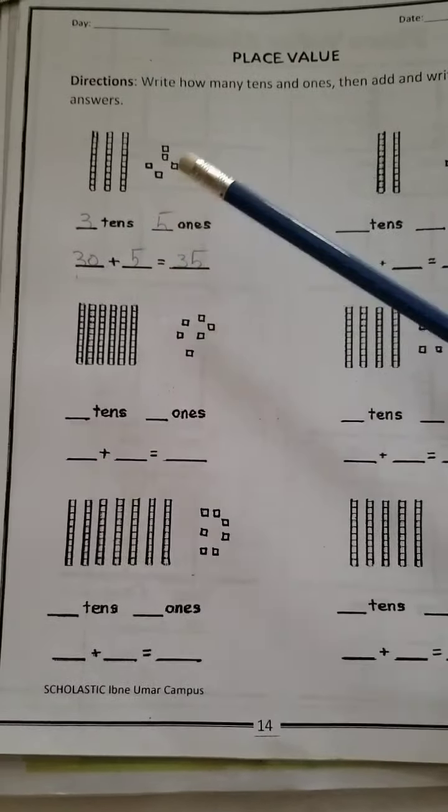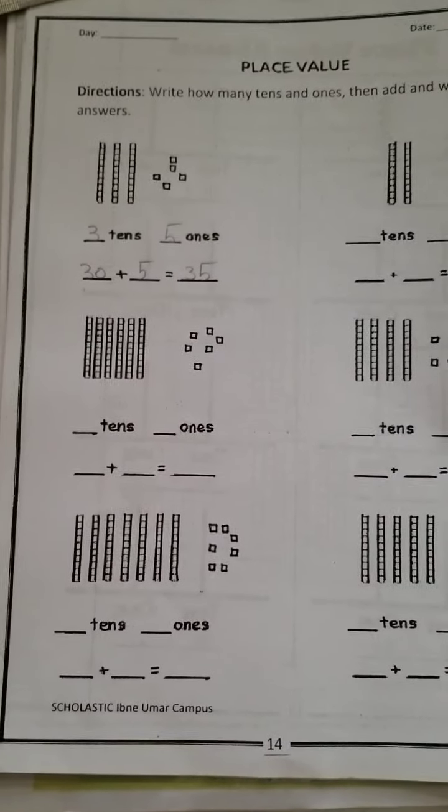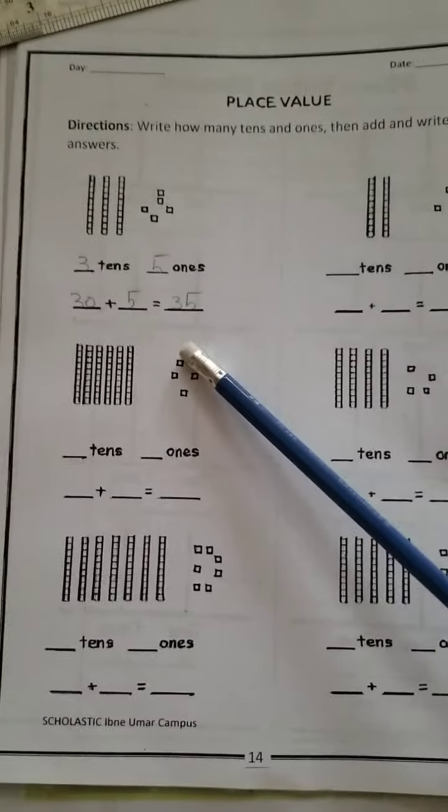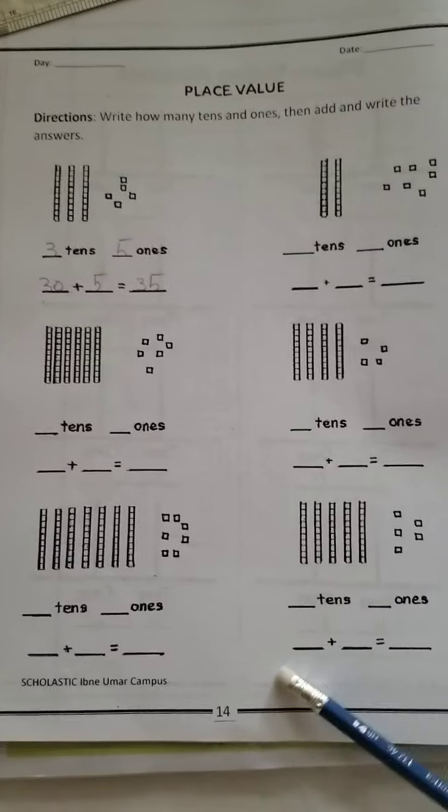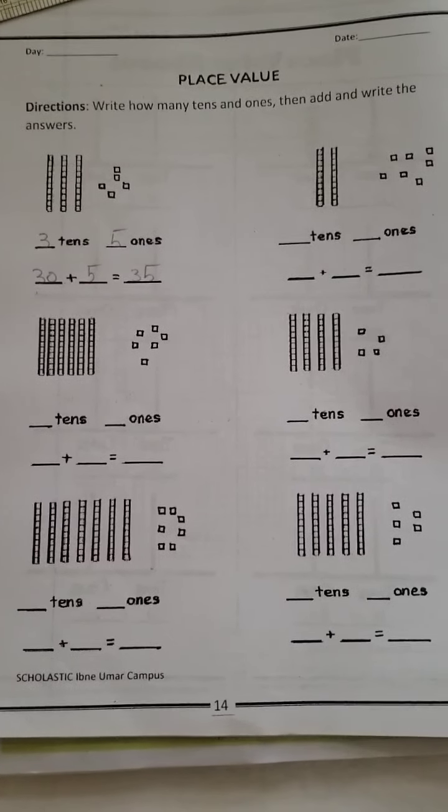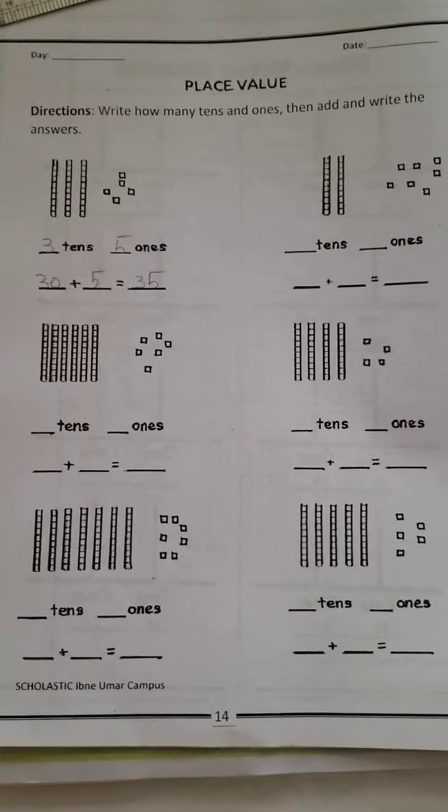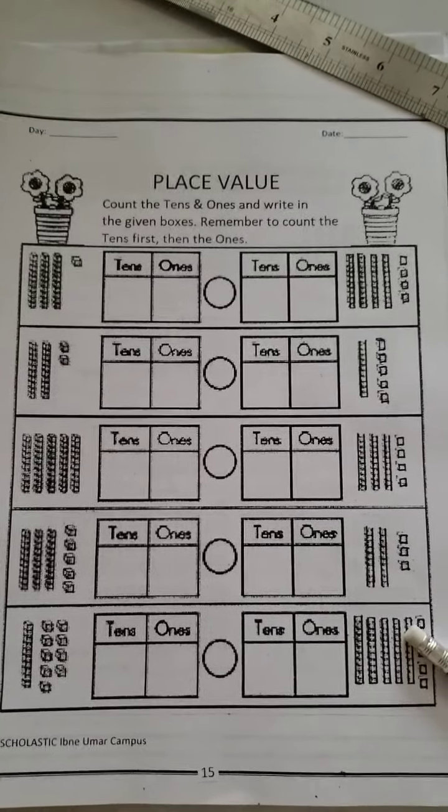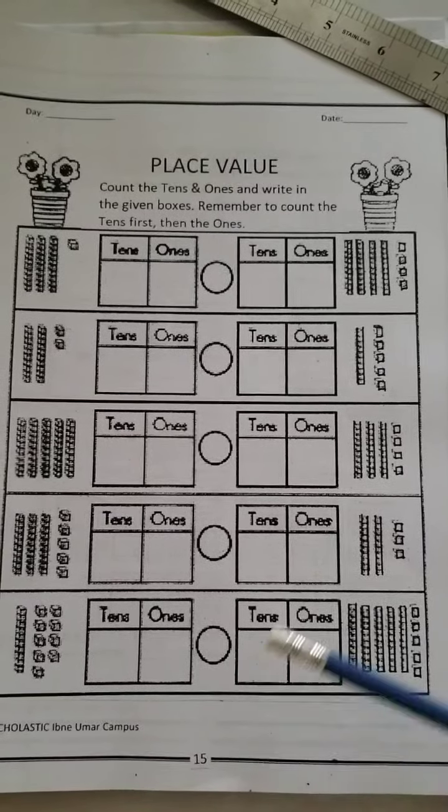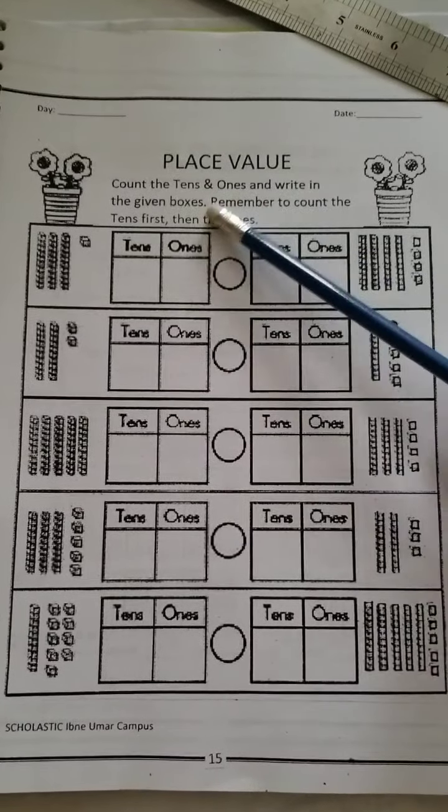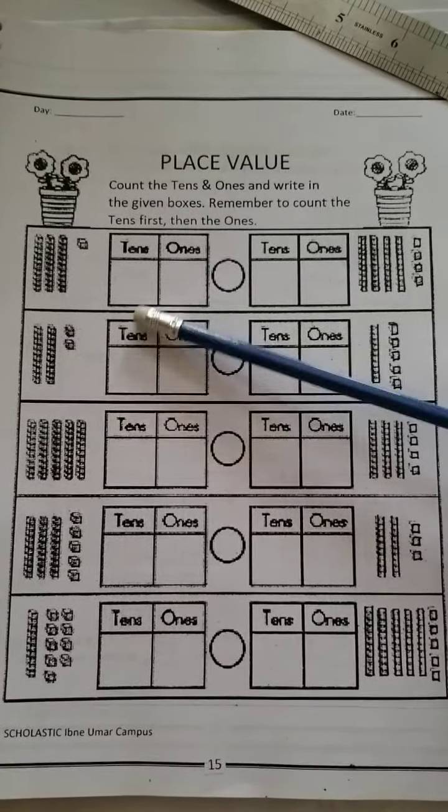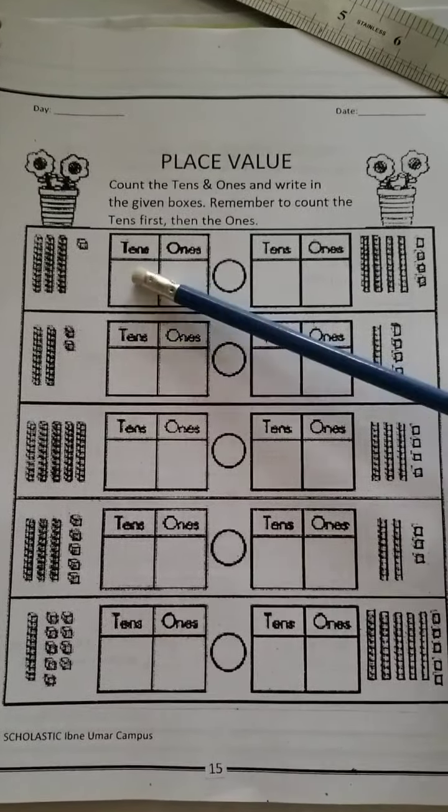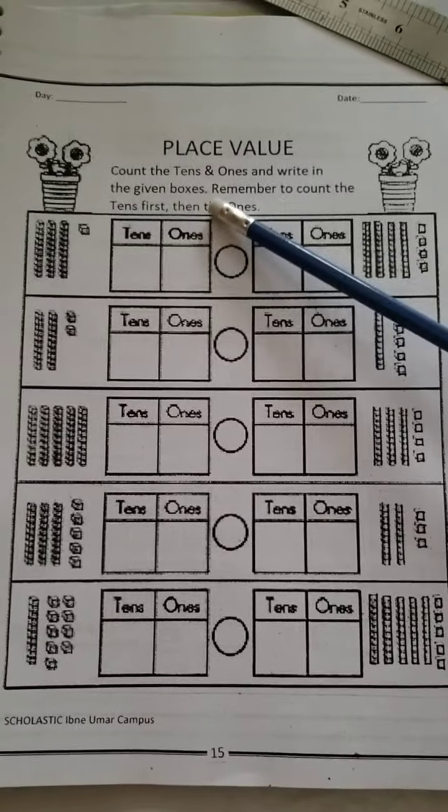If five is at the place of units or ones, its value is five. So if you add them, what will be the answer? Thirty-five. Yes. Then you will write down the answer. This is your place value and expanded form both. You will do all the equations correctly, then send the picture on the assignment tab.